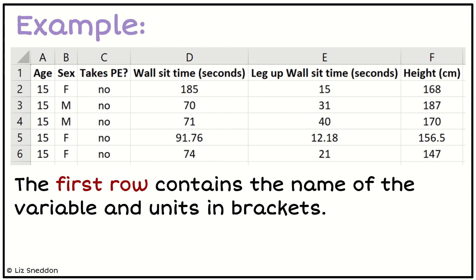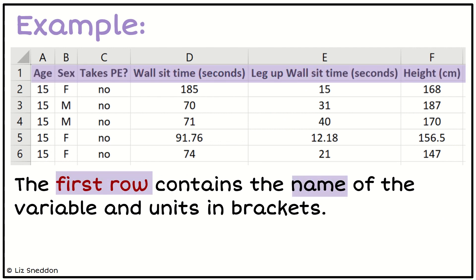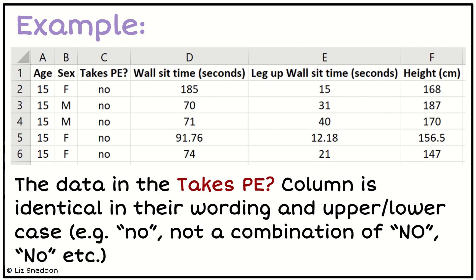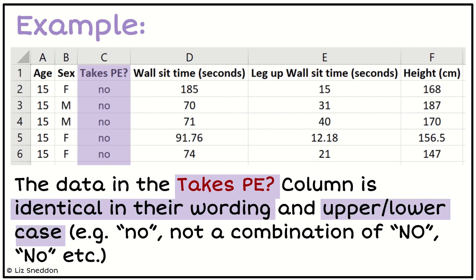So here's an example. What I want you to notice is in that very first row, I've got the name of the variable and the unit. So I've got 'wall sit time (seconds)'. I've made sure that that first row is a heading, and when I copy this data later into NC Graffer, I'm going to copy that heading as well. I also want you to notice the third column — the 'takes PE' column. That's a categorical variable, and I want you to notice how I've used the word 'NO' and they're all lowercase, all exactly the same, with no extra space at the start or end, and not a mixture of some capital and some lowercase. They need to be identical.